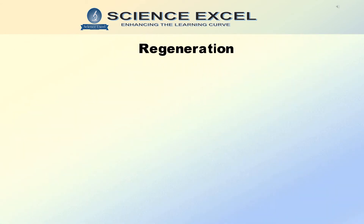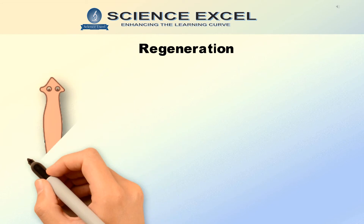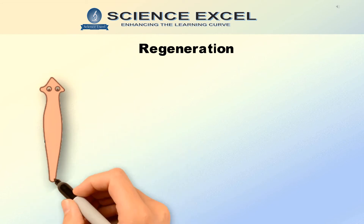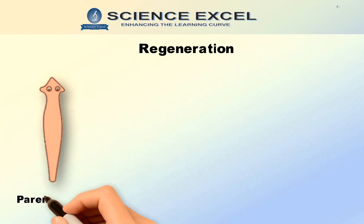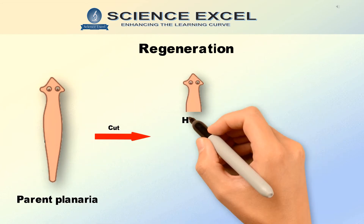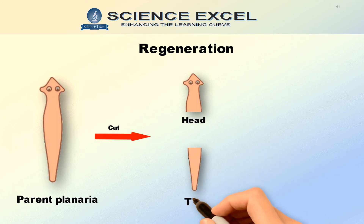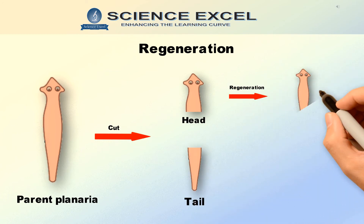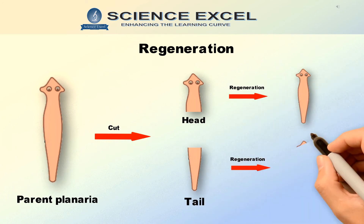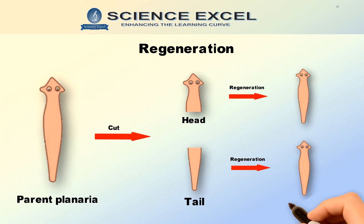Regeneration is a process in which the organism is capable of regrowing certain parts of the body or forming a new organism from the disjointed part. Let's take an example of planaria. If the structure of the organism is cut or fragmented, the piece that has detached from the parent grows into an independent, complete organism.